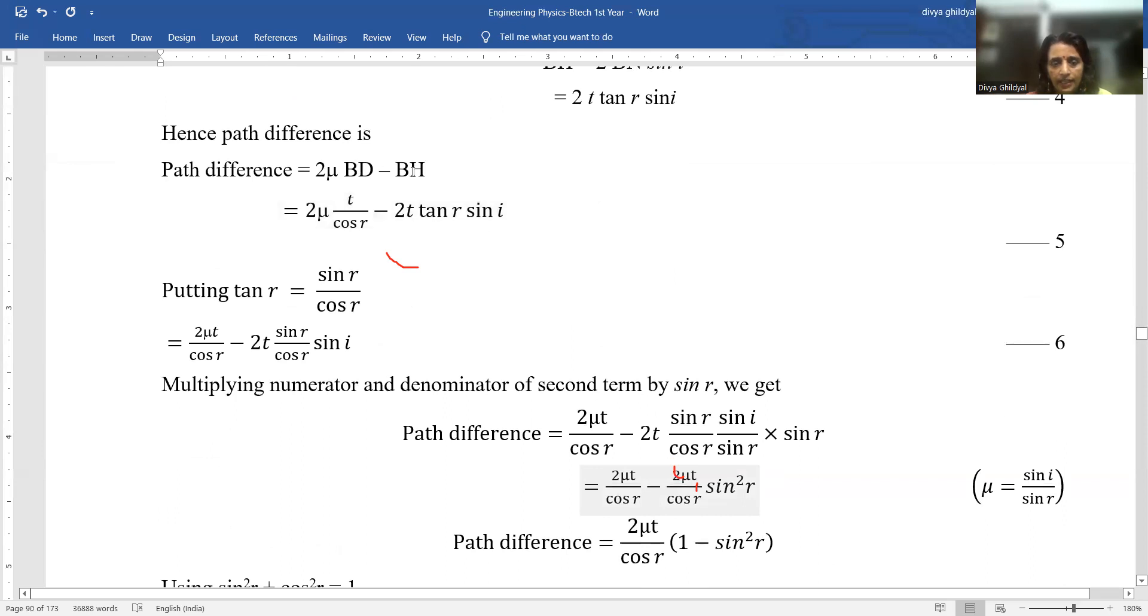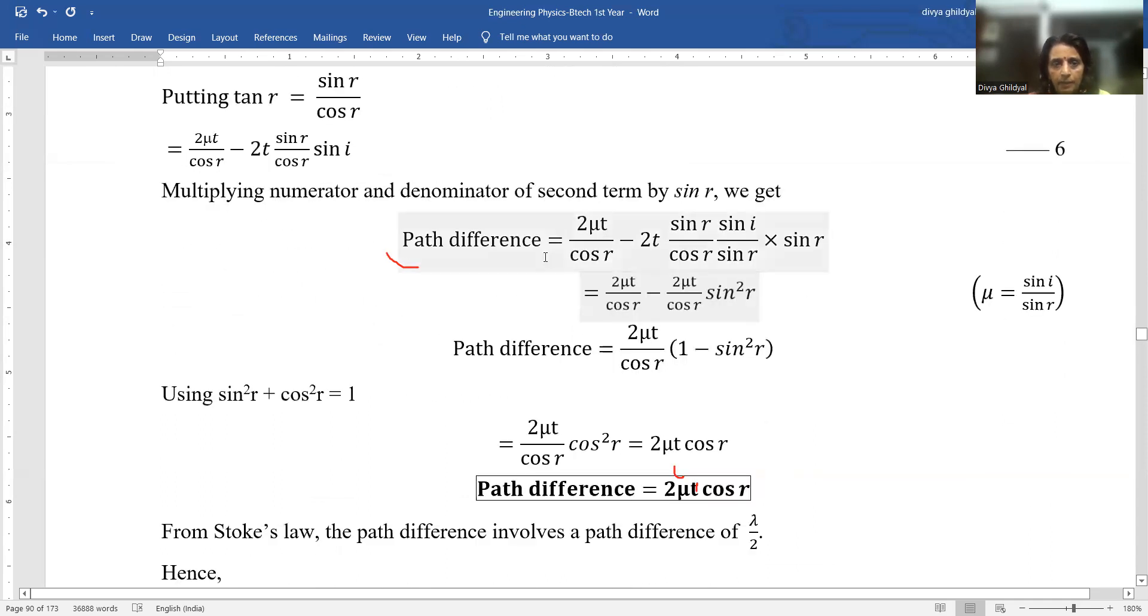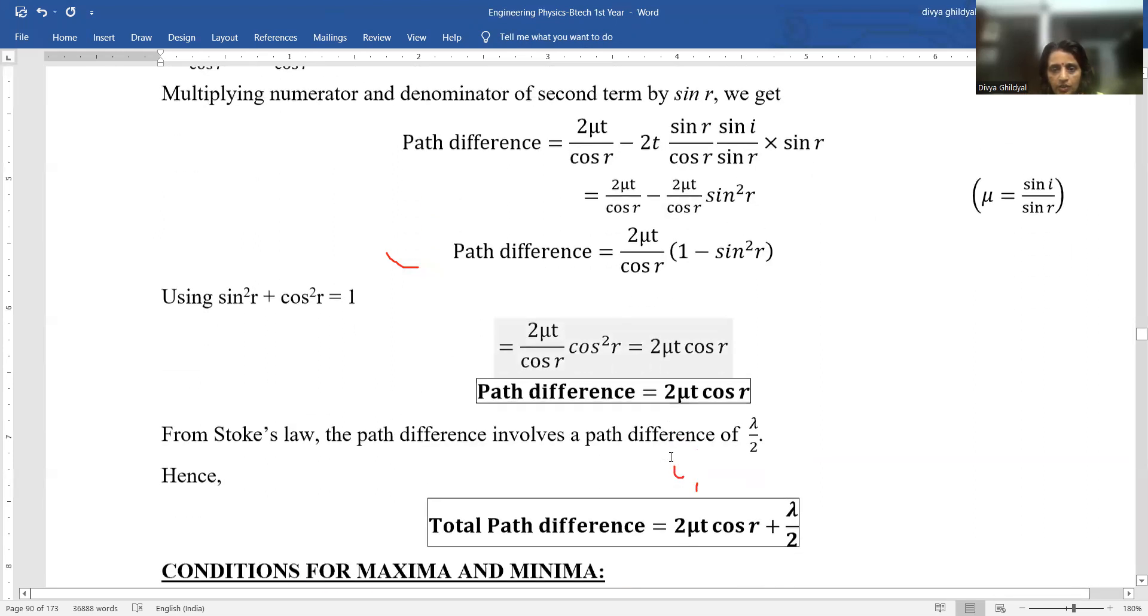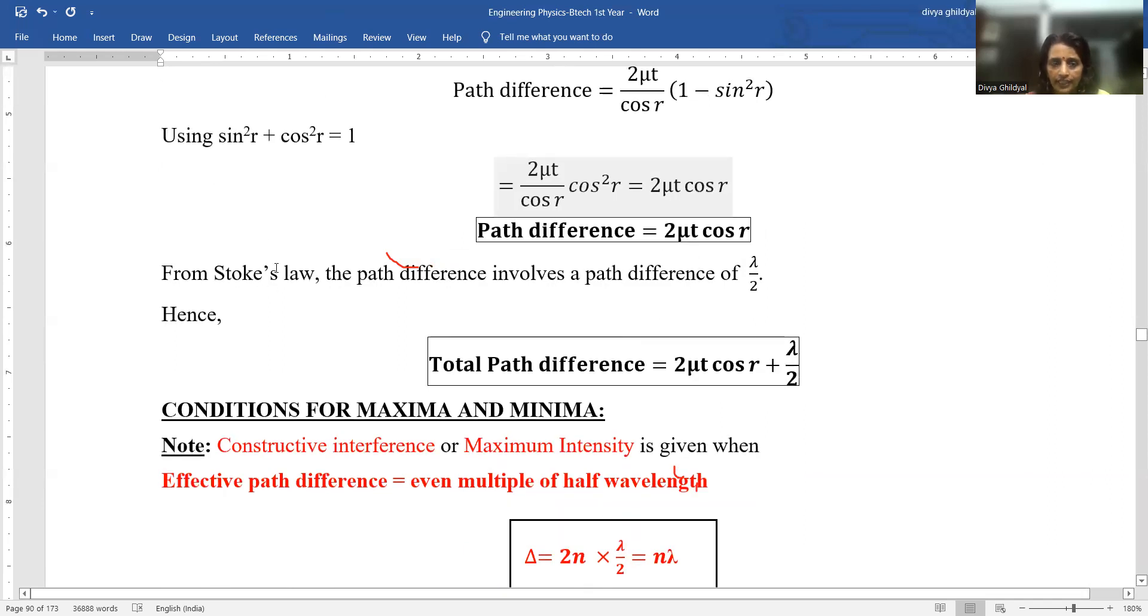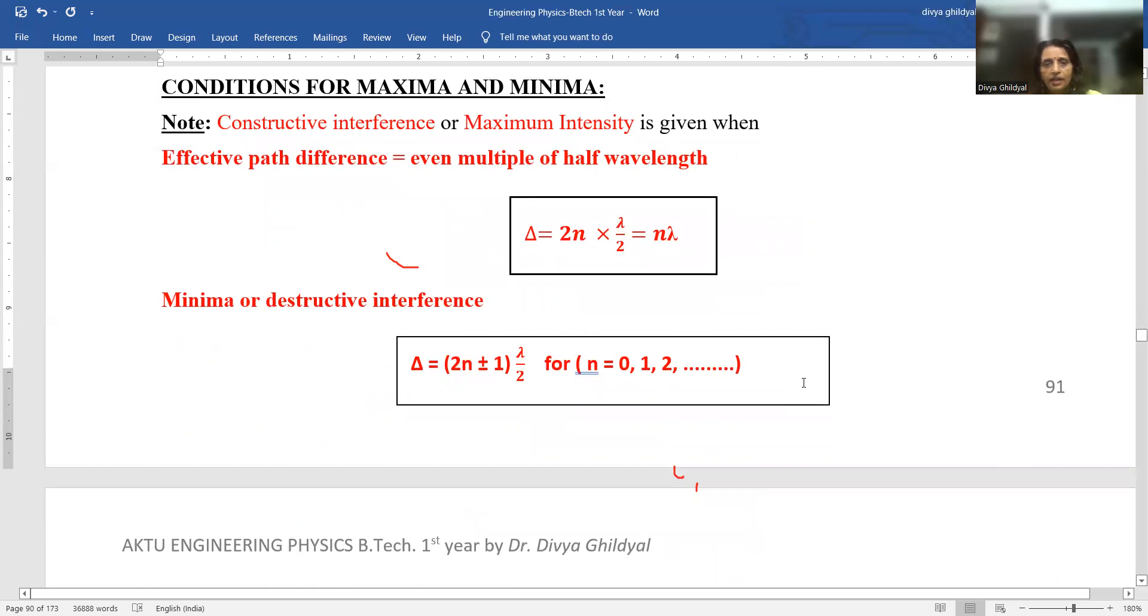And path difference BD minus BH. BD value we have just calculated. And BH we put the values. And tan theta is sine theta upon cos theta. So we put the value of tan R here. Multiplying numerator and denominator of second term by sine R, we get the formula for path difference. Now we will simplify this further by using Snell's law, which states that mu is equal to sine I by sine R. Using sine square theta plus cos square theta equal to 1, we simplify this expression further. And then since this is a case of reflected light, from Stokes law we add an additional path difference of lambda by 2. And we get total path difference equal to 2 mu T cos R plus lambda by 2.